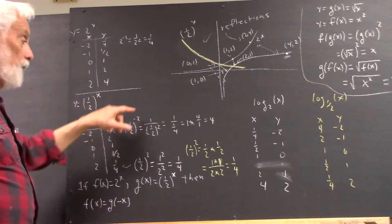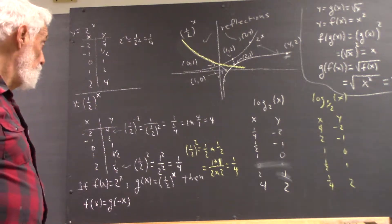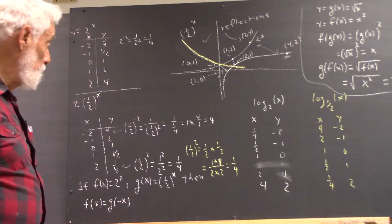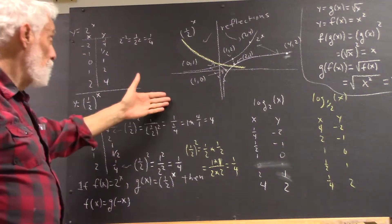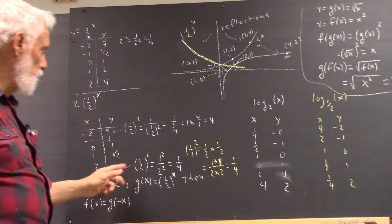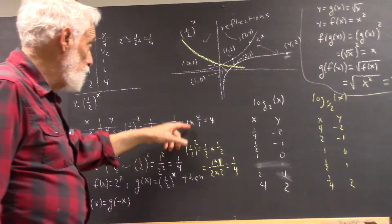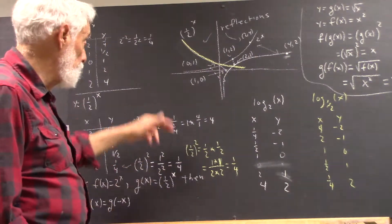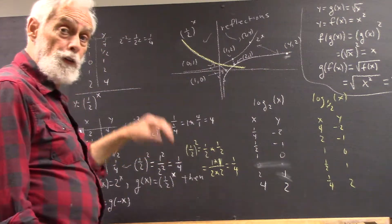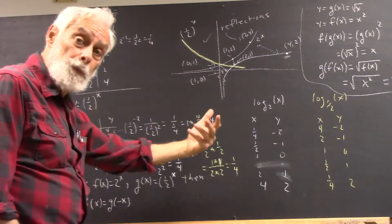What about 1 half to the negative 2? Well, using what we see up here, that's 1 over the square of 1 half, which is 1 over 1 fourth, because we know the square now of 1 half is 1 fourth. And that's 1 times 4 over 1, just by the rules for dividing fractions.